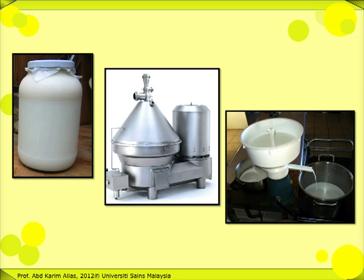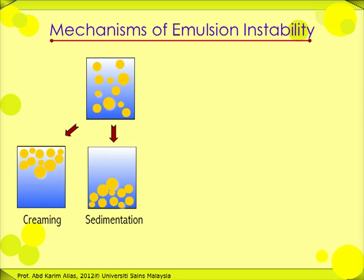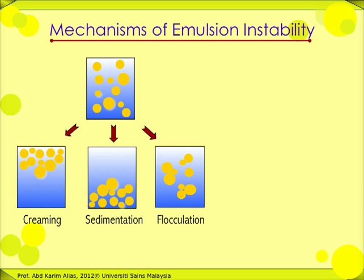Next is flocculation. Flocculation is defined as a process by which two or more droplets aggregate without losing their individual identity. In practical food emulsions, larger droplets — that is, larger than two micrometers — flocculate faster, and flocculation is promoted by creaming. Flocculation occurs when van der Waals attractive forces between droplets exceed the electrostatic repulsive forces.